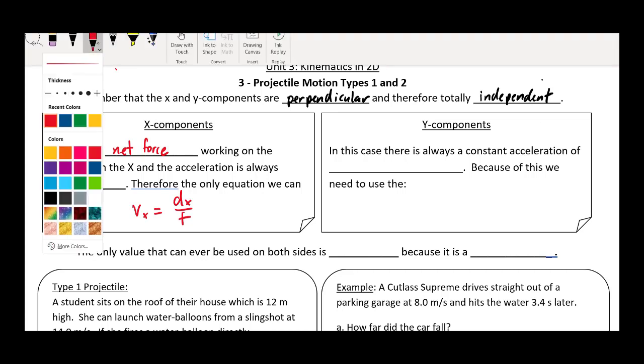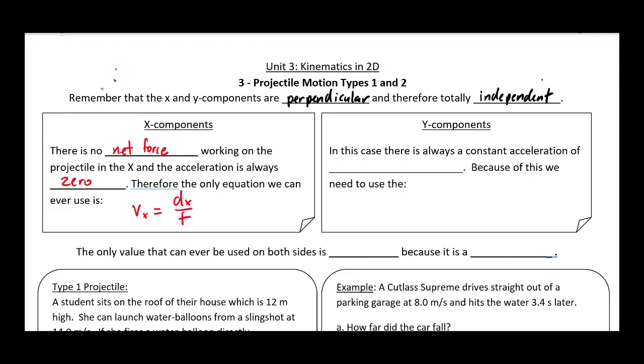However, in the Y direction, things are a little more complicated because there's a constant acceleration of g, which is due to gravity, of negative 9.8 meters per second squared. So because there's that constant acceleration in the downwards direction, we need to use the big three. And if you thought you were done with all those fancy kinematics equations, well, sorry, but you're not.